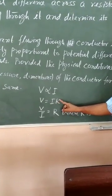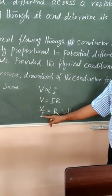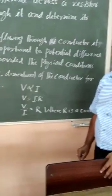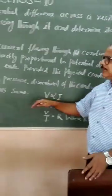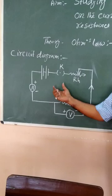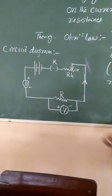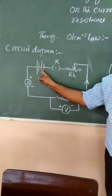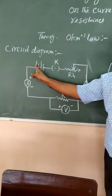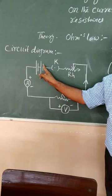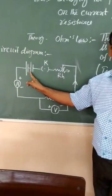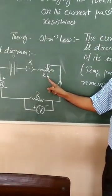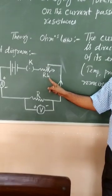This is the circuit diagram. These are components. This combination of cells is called battery. This switch is on-off. This is rheostat, the second name which we know is variable resistor.